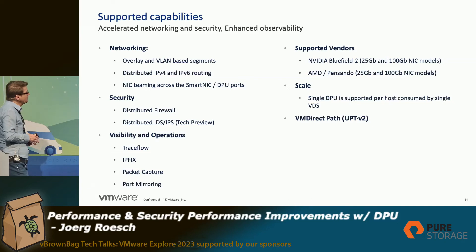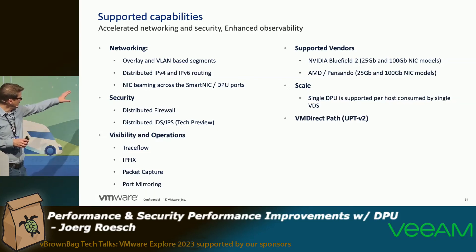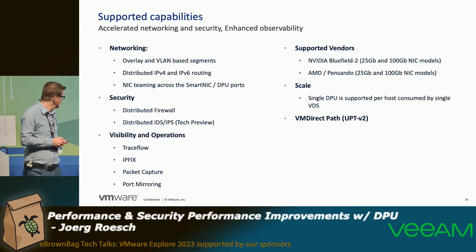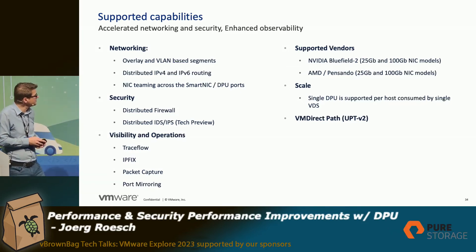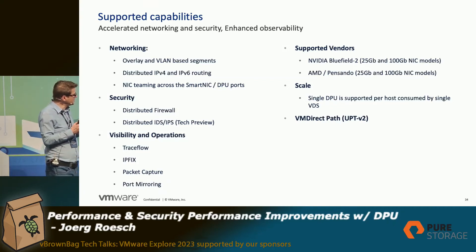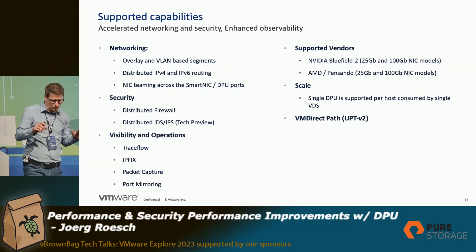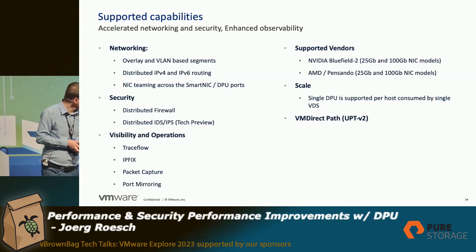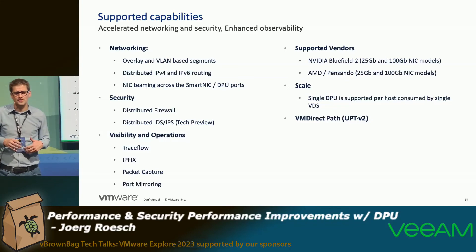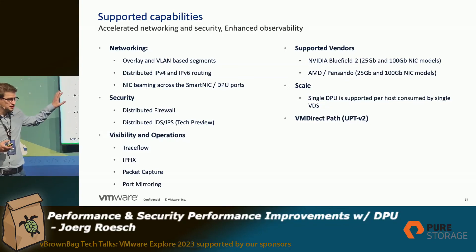What is currently supported: overlay and VLAN-based segments, routing and switching, and distributed firewalling as I mentioned. IDS/IPS is a tech preview. For visibility and operations: trace flow, IP fix, and so on. The NVIDIA BlueField-2 card supports 25 gigabit and 100 gigabit, and AMD Pensando also supports 25 gigabit and 100 gigabit. Scaling-wise, we currently only support one DPU per host, but that is on the near-term roadmap. We also announced VCF 5.1 — I think it was yesterday or two days ago — and with VCF 5.1 we also support DPU.